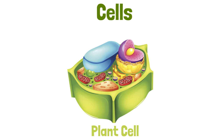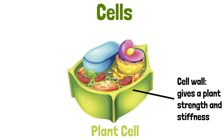But plant cells have a few additional parts. One of these is a cell wall. A cell wall is a tough layer outside of the cell membrane that gives the plant its strength and stiffness. This helps the plant cell keep its shape.